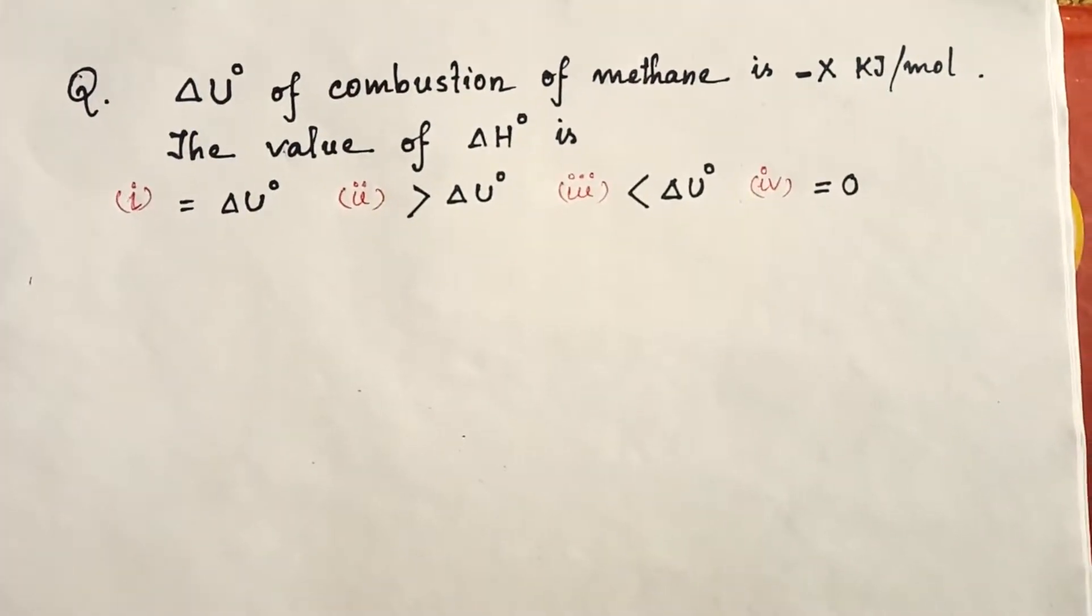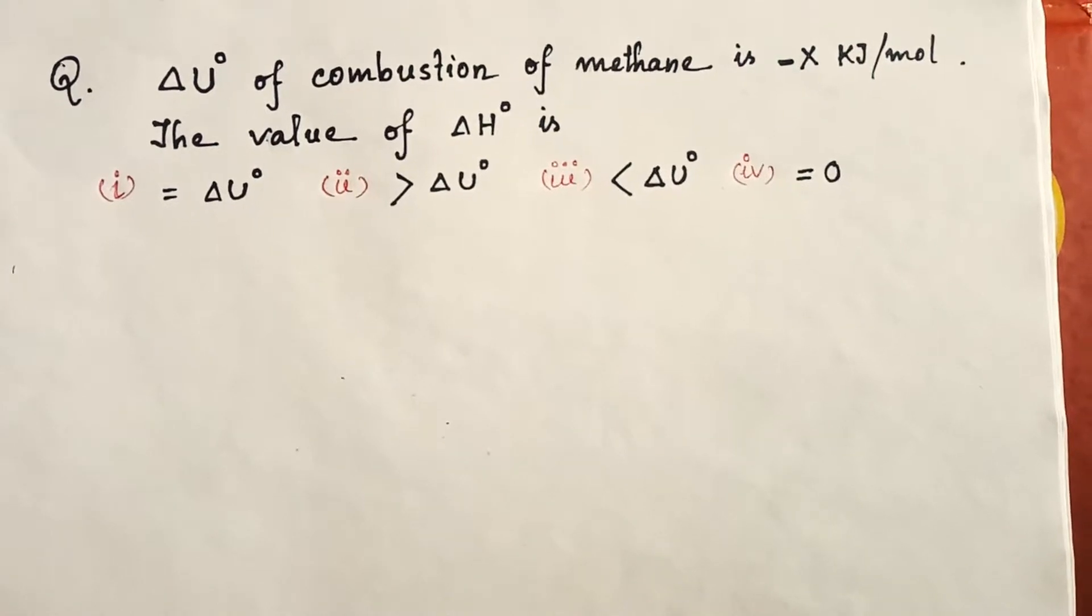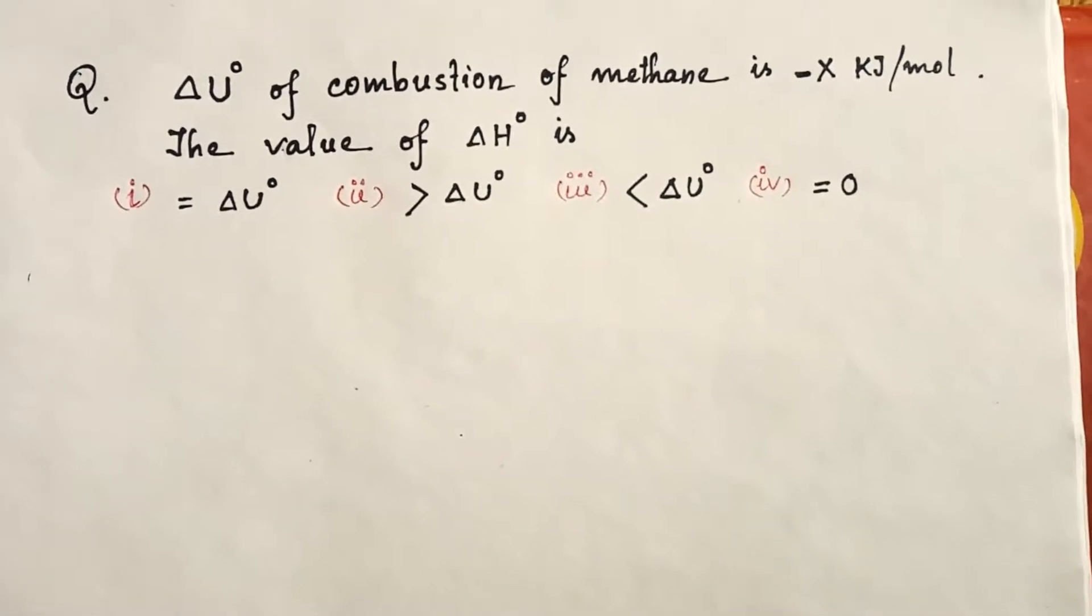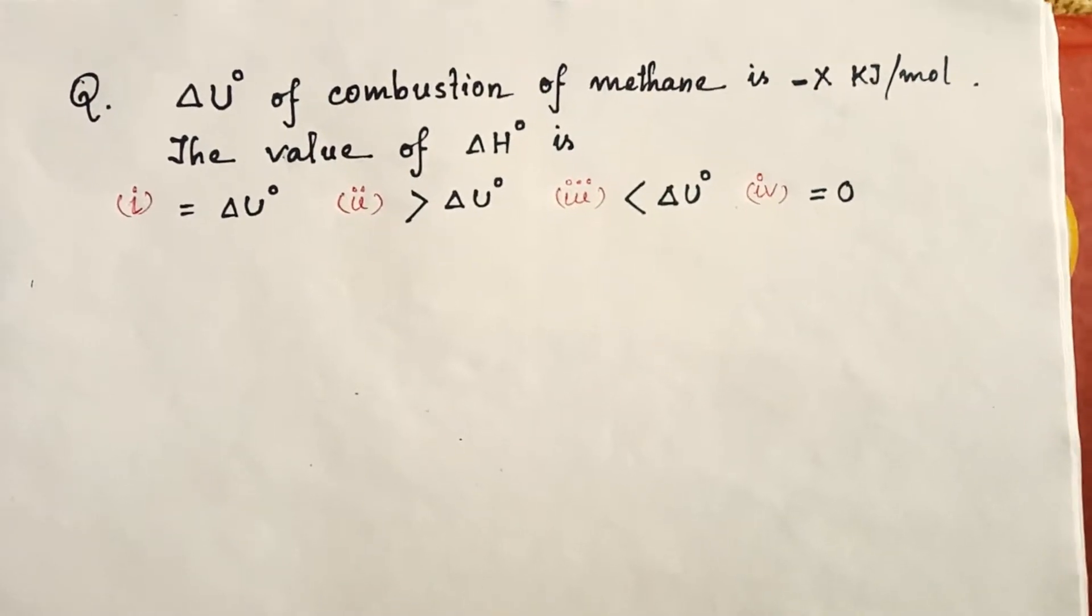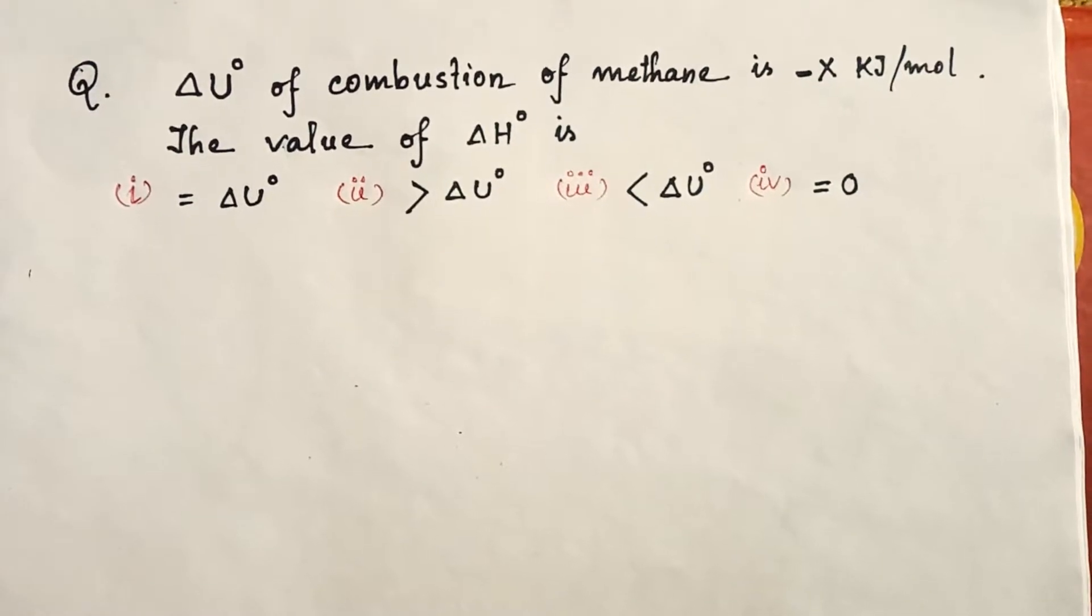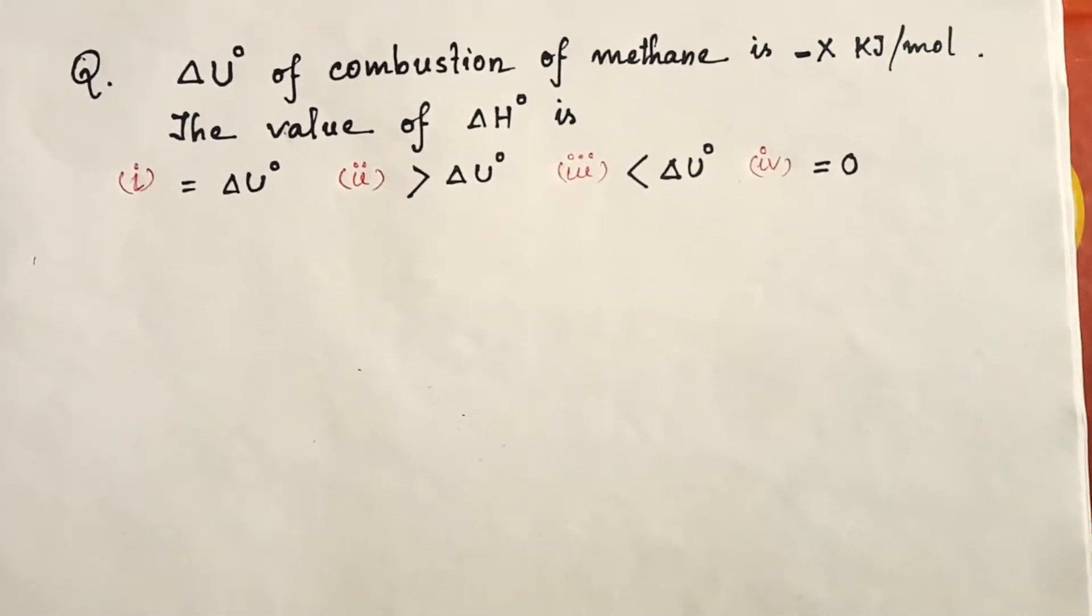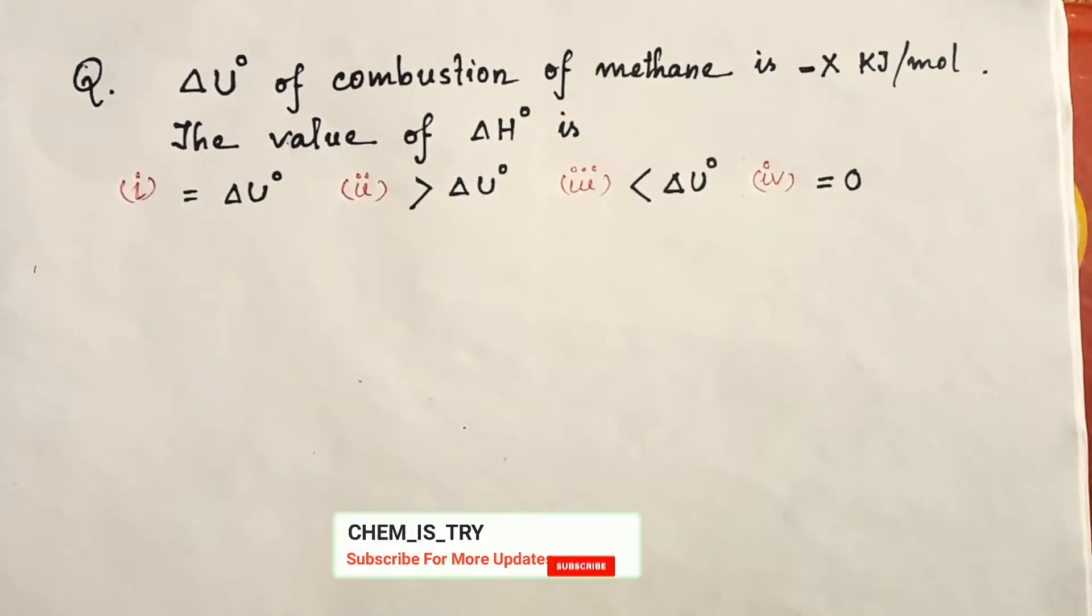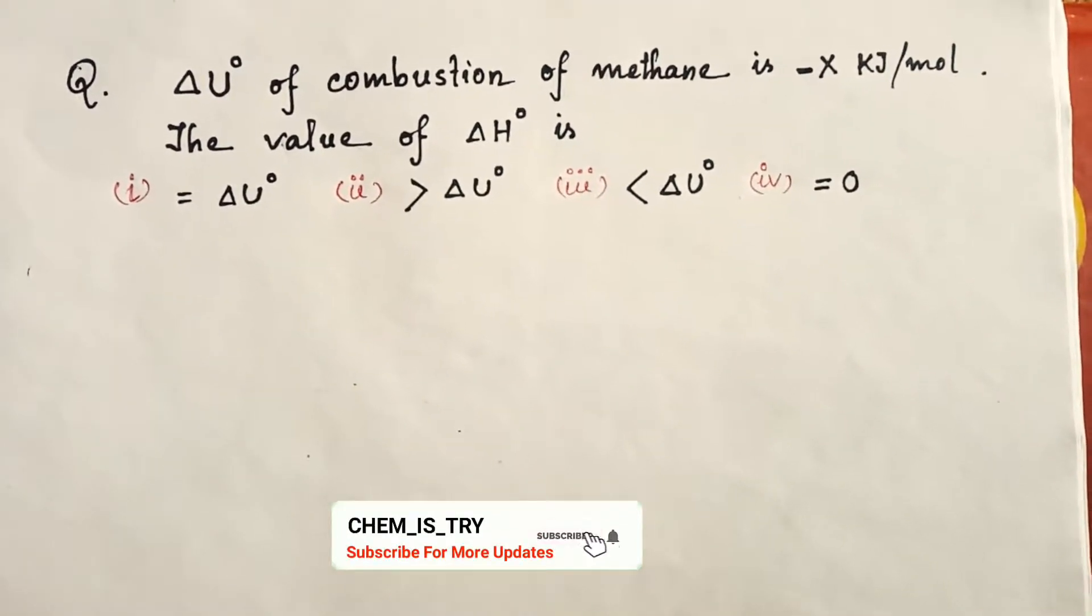Today we are going to solve one problem from thermodynamics chapter of class 11. The question is: ΔU° of combustion of methane is -X kJ/mol. The value of ΔH° is... We are given four options, which one is right we have to choose.